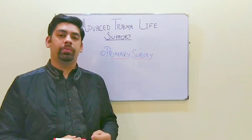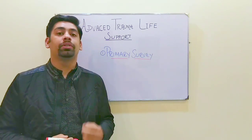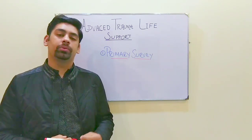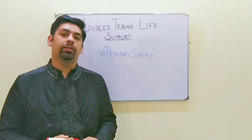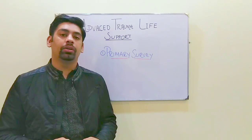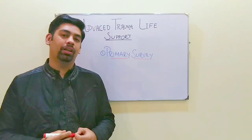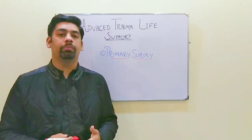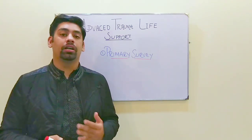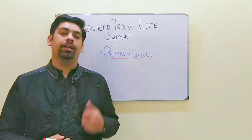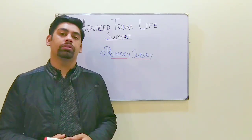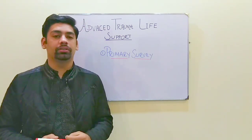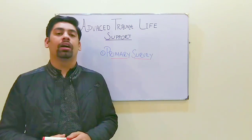The aim of the primary survey is to treat what is killing the patient. It helps to identify the problems related to airway, breathing, and circulation which can hamper the patient's chance of survival. The primary survey consists of five main components which are to be assessed.